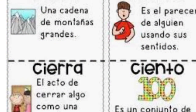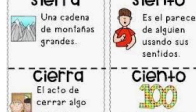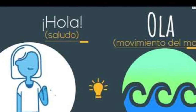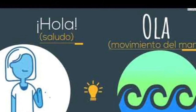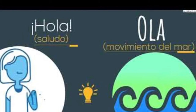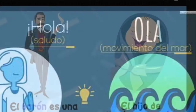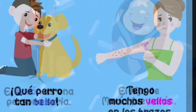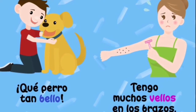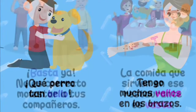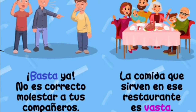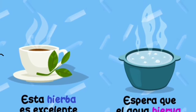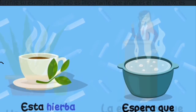En el español hay muchas palabras homófonas que causan confusiones durante su escritura, por eso es importante que analices el contexto, es decir, a los vocablos que las rodean, así sabrás cuál es el significado y su ortografía. La lengua española sin duda cuenta con muchas palabras que se parecen unas a otras, ya sea por la forma en que se escriben o por cómo suenan, pero debes estar muy atento al escucharlas o escribirlas, ya que a pesar de estas similitudes es posible que signifiquen algo distinto, como todos los ejemplos que se muestran enseguida.